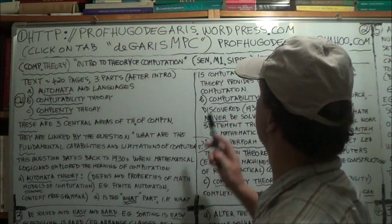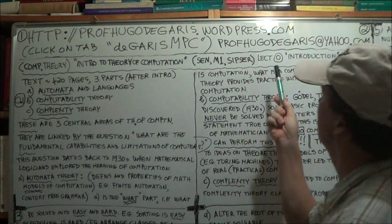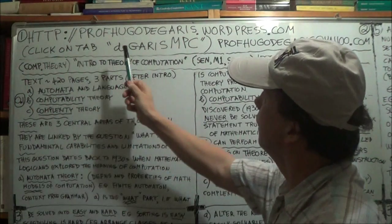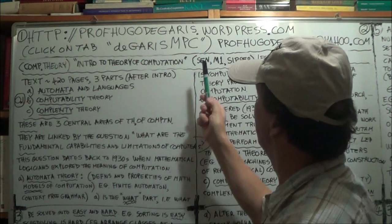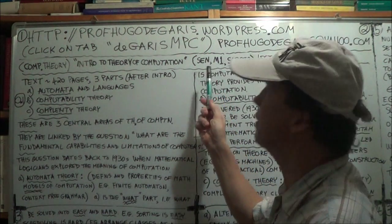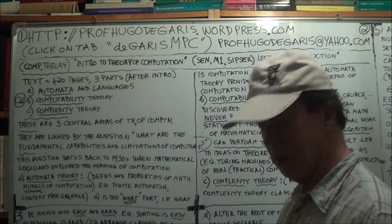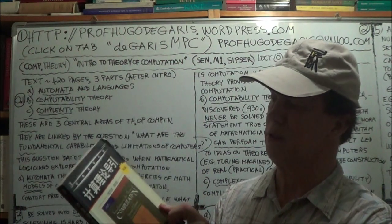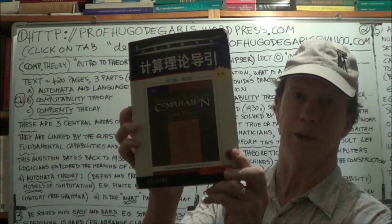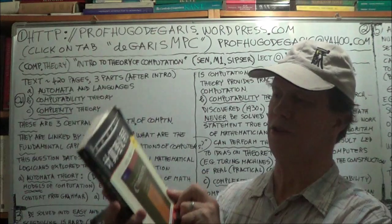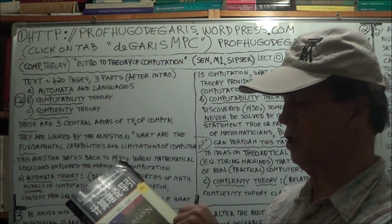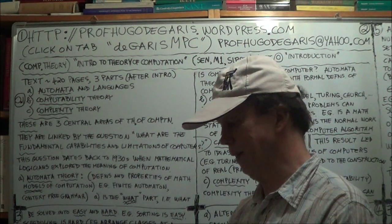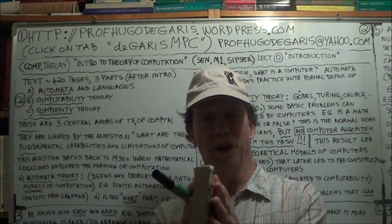This is lecture 0, an introductory lecture for a computer theory type course. The title is Introduction to Theory of Computation. It's a senior to first-year masters level course. The textbook I'll be using is Sipser — S-I-P-S-E-R. This is the second edition by Michael Sipser.